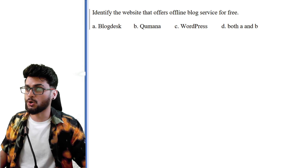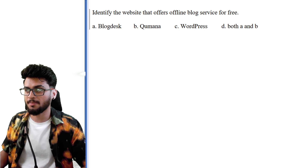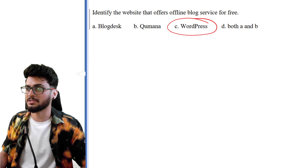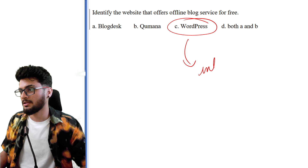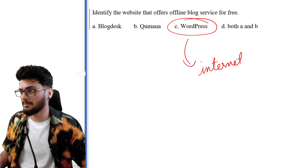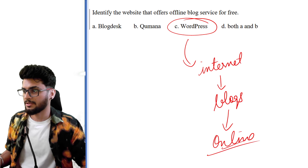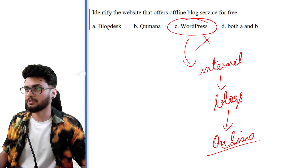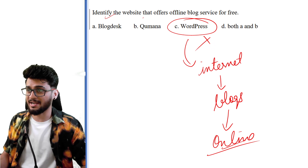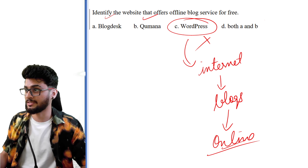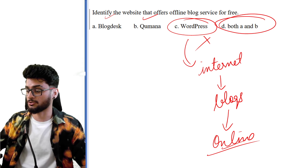'Identify the website that offers offline blog services for free.' You might have heard about WordPress — it's a site where you can write blogs but it is always online, so you can neglect it. Between Blog Desk and Kumana, if you have read about them in your notebooks, D is the correct answer.